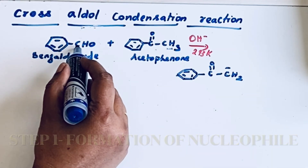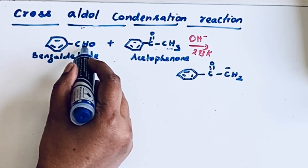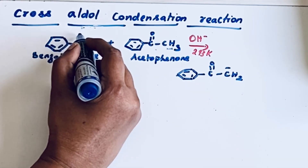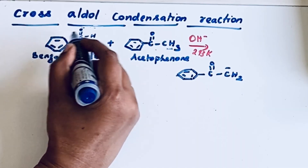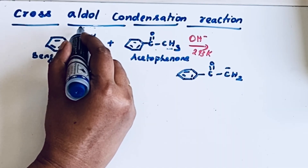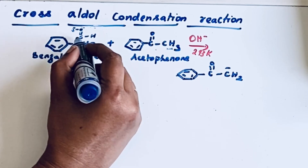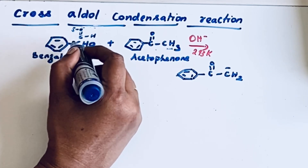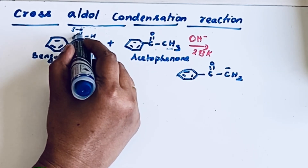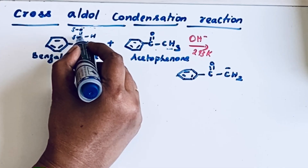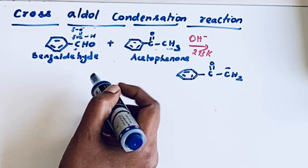Now if you look at benzaldehyde, the CHO group is the functional group here. We can write it as C double bond O H. Here, oxygen is highly electronegative, so it gets a partial negative charge and this carbon will get a partial positive charge — that means this carbon acts like an electrophile.